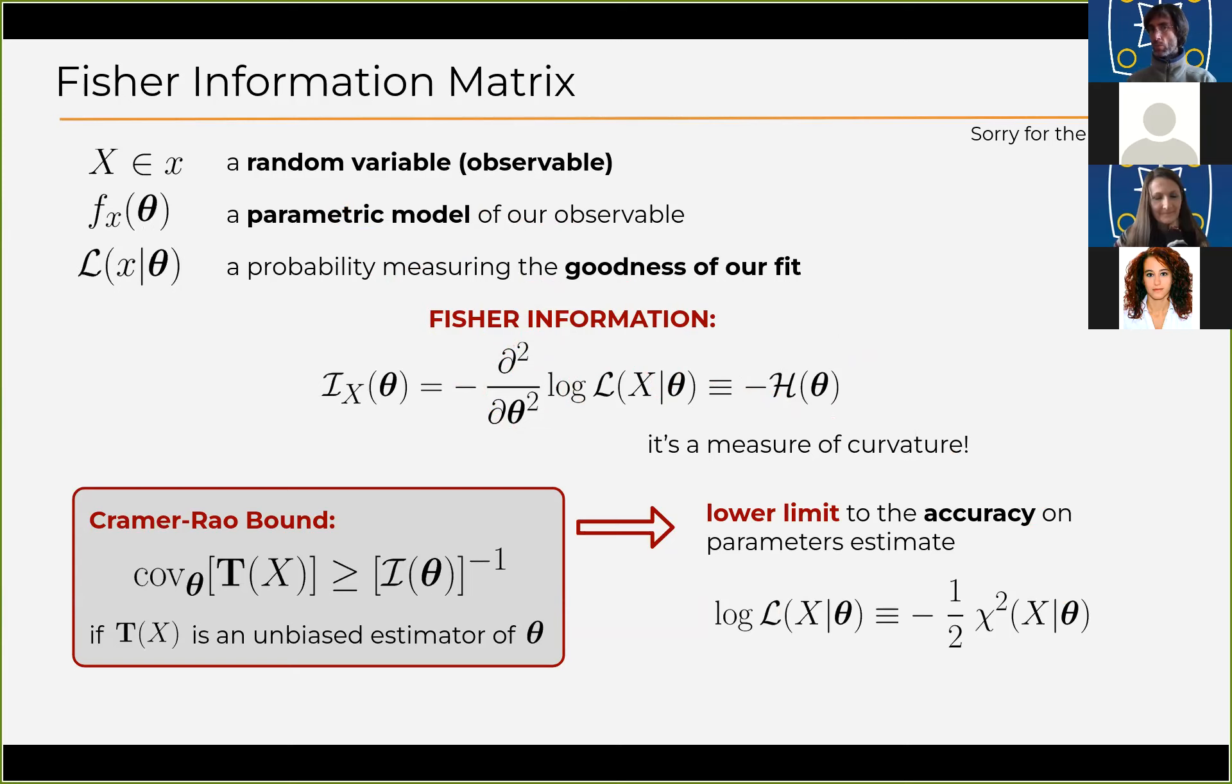Now, there is a statistical theorem, the Cramer-Rao bound, telling you that the inverse of this Fisher information matrix gives you a lower bound on the covariance matrix of your parameters, provided that you have an unbiased estimator of these parameters. In general, as an unbiased estimator of the parameters, we can assume the log likelihood defined as the chi-square between our observable and the parametric model.